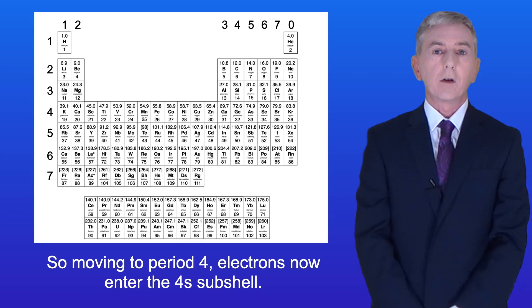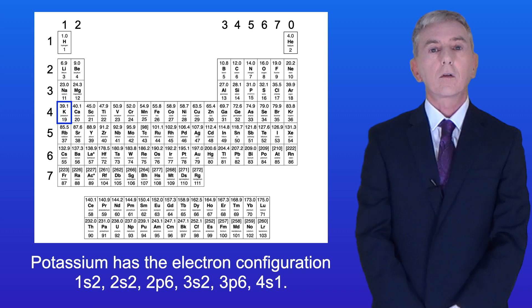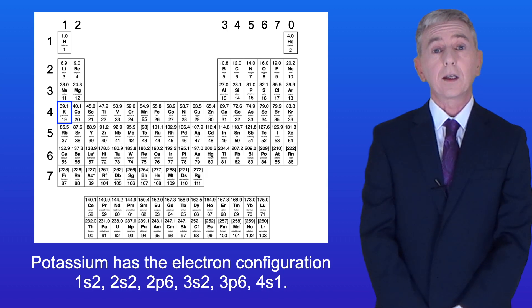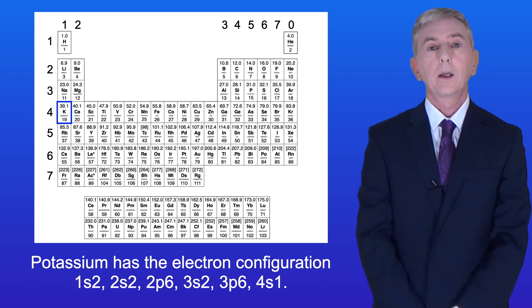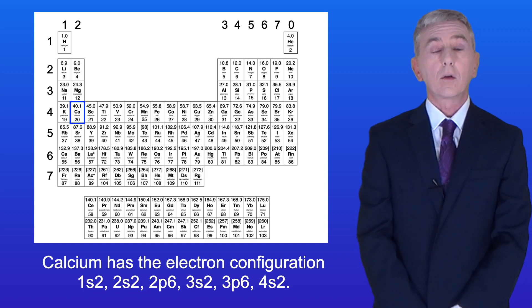So moving to period 4, electrons now enter the 4s-subshell. Potassium has the electron configuration 1s2 2s2 2p6 3s2 3p6 4s1. And calcium has the electron configuration 1s2 2s2 2p6 3s2 3p6 4s2.